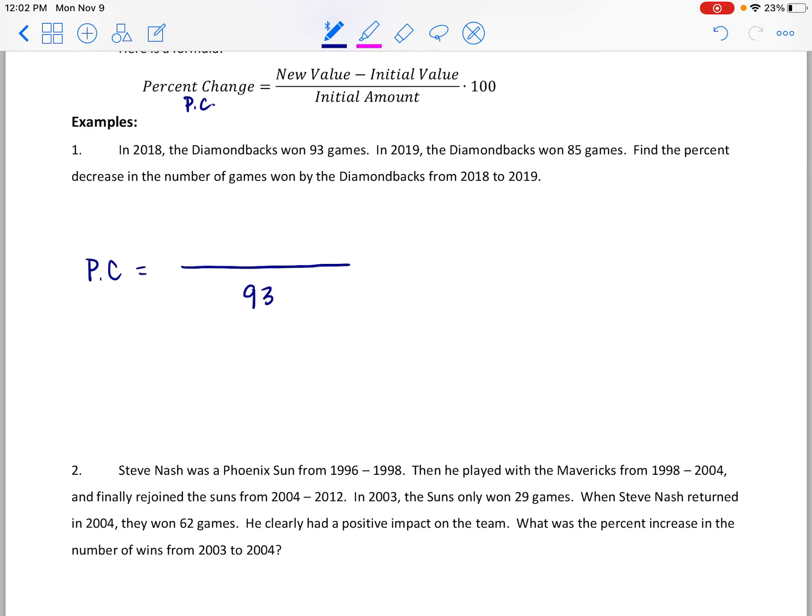So the percent change, let's call it PC, is going to be a fraction. In the fraction we want on the bottom the initial amount. Initially is our oldest or original value, and in this case the original value is in 2018, that was the 93 games. On the top of the fraction we put the new value, we subtract out that initial value to figure out the difference. So we're going from 93 games to 85 games. We want to take the 85 and subtract the 93 because it's the newer and then the initial.